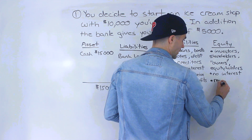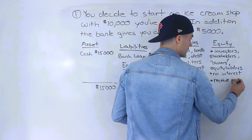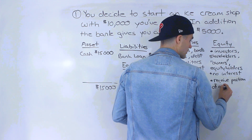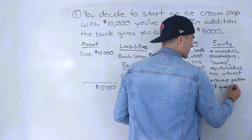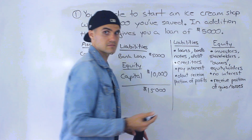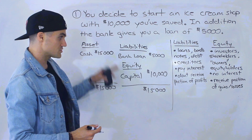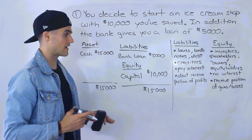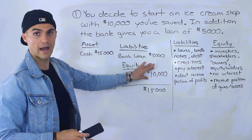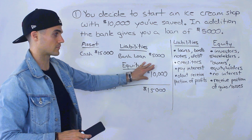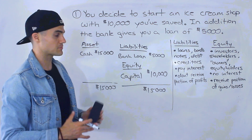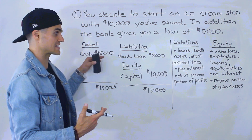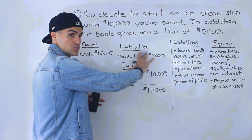Equity holders receive a portion of gains, but you also take part in the losses. So if you start losing money in the company — say you have more expenses than revenue — that's coming out of your share. And let's say something bad happens, where maybe you have to start claiming bankruptcy and you have to start selling some of the assets and then paying back these sources.